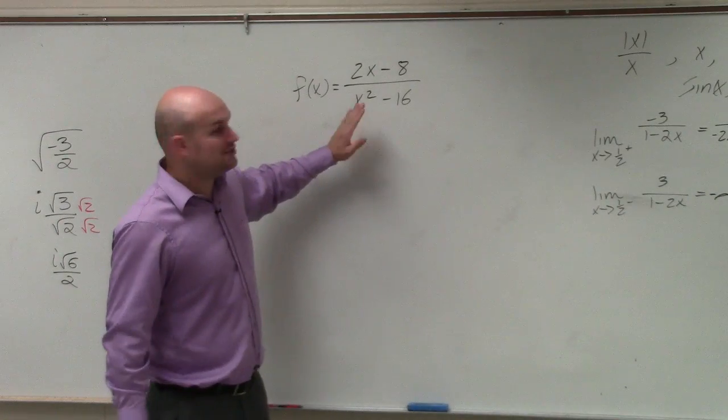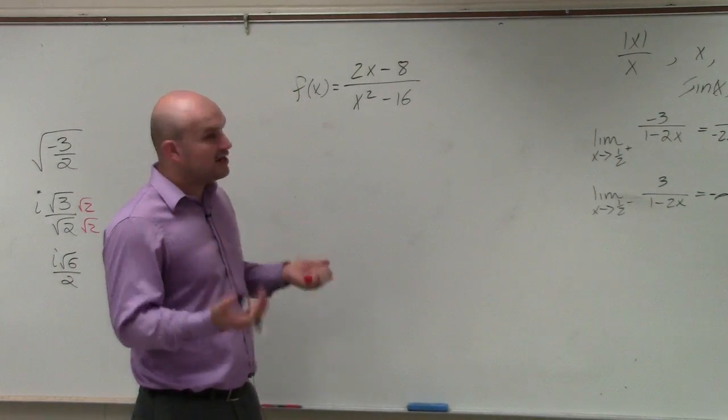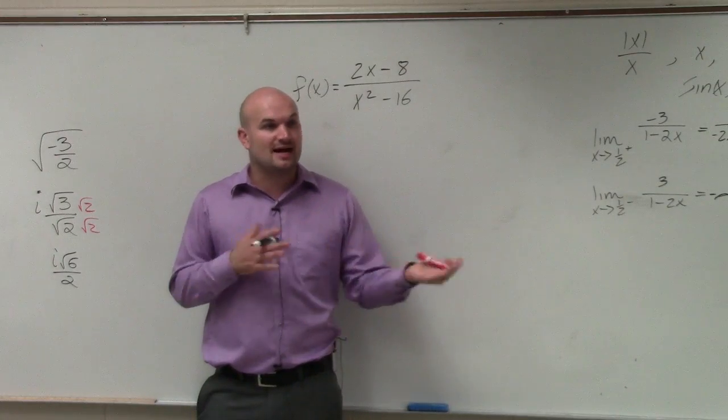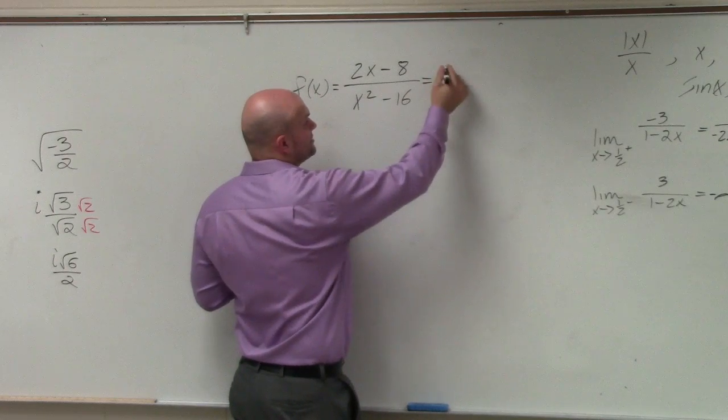So even though we know our discontinuities are what's going to make our denominator equal to 0, we've got to be careful in making sure that it's not a hole or an asymptote. So what we can do then is factor our numerator and our denominator.